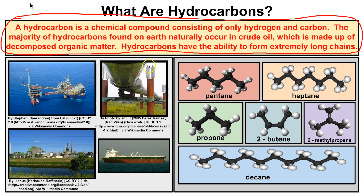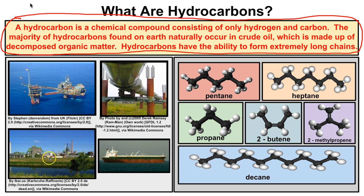There are millions of different types of hydrocarbons and they have the ability to form extremely long chains. Here we can see an oil platform drilling for crude oil, which is made up of many different types of hydrocarbons. The oil can be piped to a refinery — for example, here's a section of the Alaskan oil pipeline — where different physical processes like fractional distillation are used to separate the different hydrocarbons that make up that oil. One of those components is gasoline.